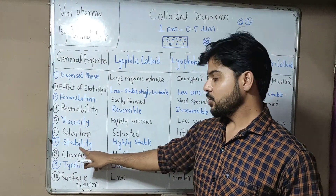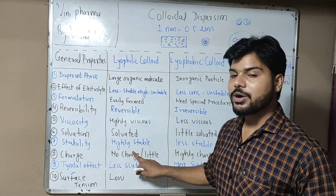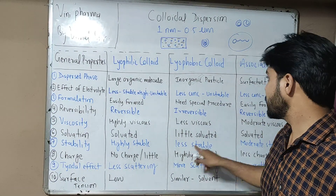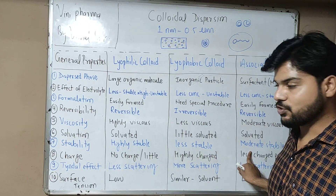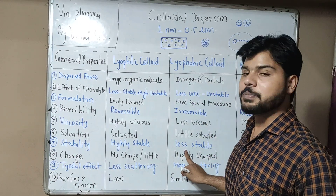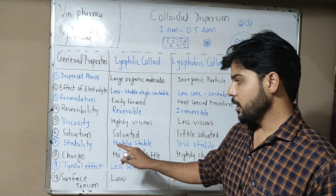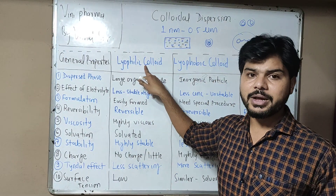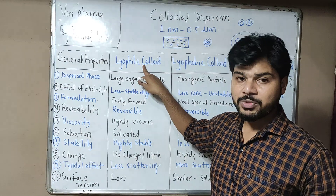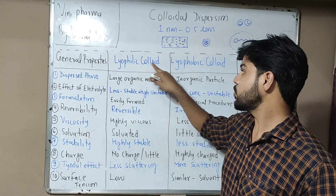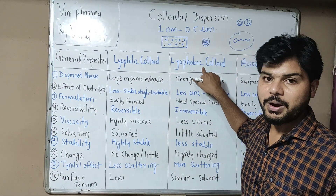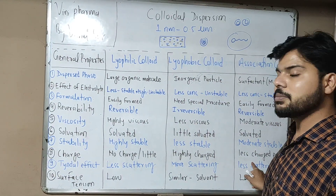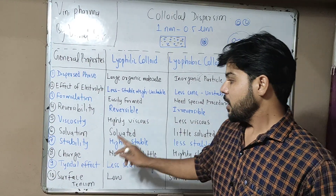Talking about stability: lyophilic colloids are highly stable, association colloids also have good stability, but lyophobic colloids are less stable. Regarding charge: lyophilic colloids have little to no charge, lyophobic colloid particles are highly charged, and association colloid particles are also less charged.